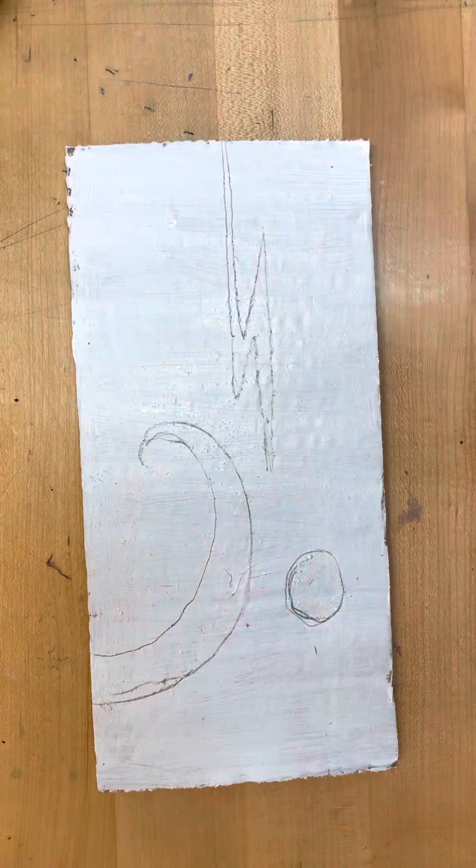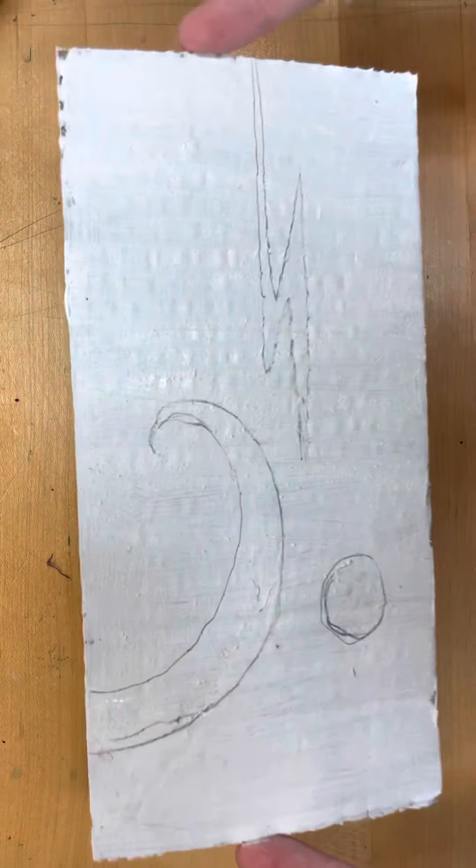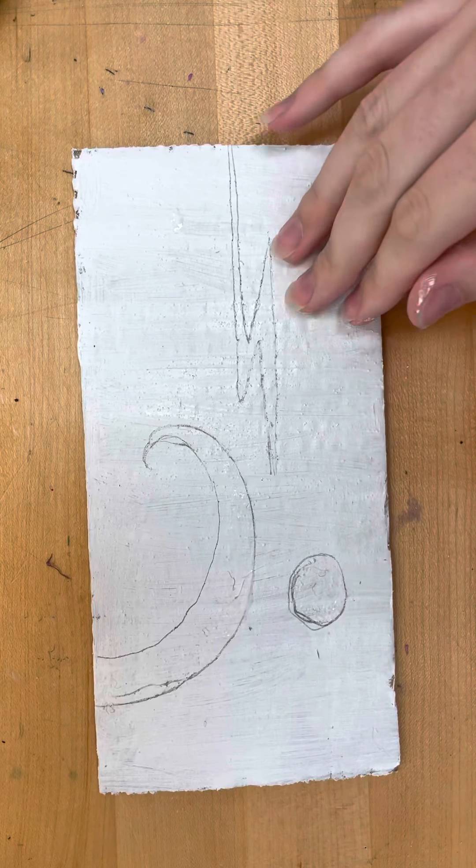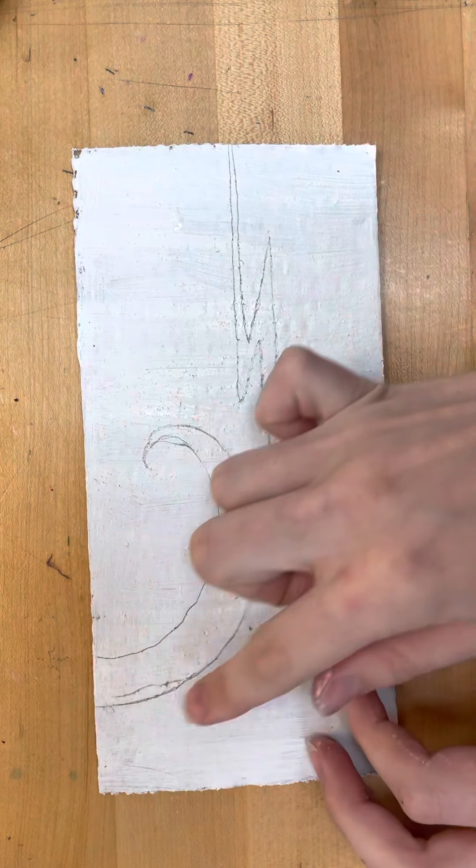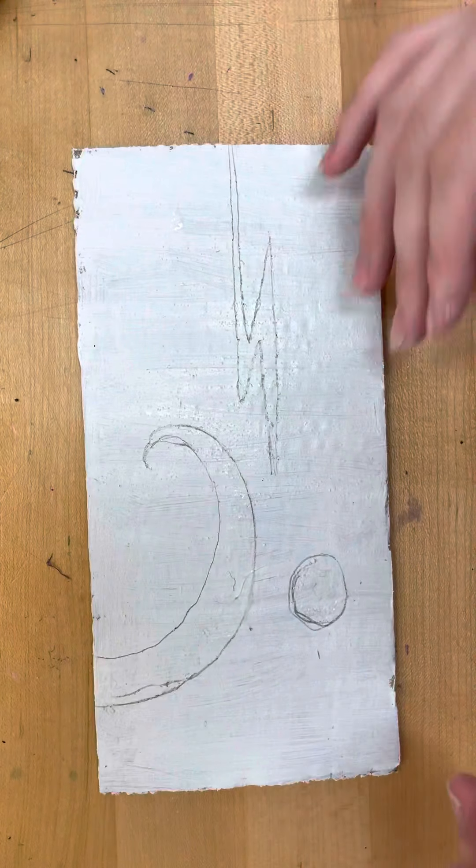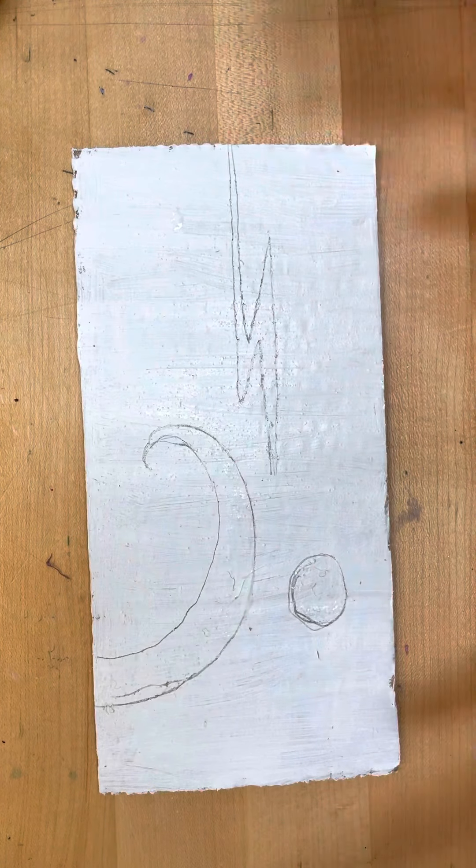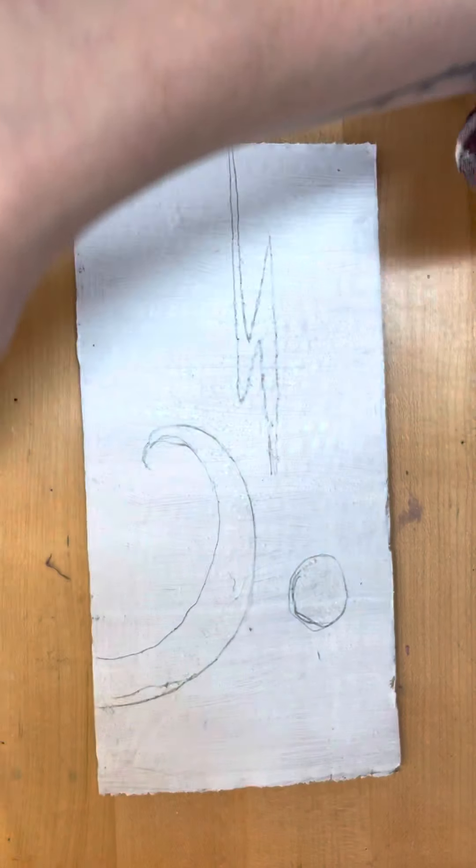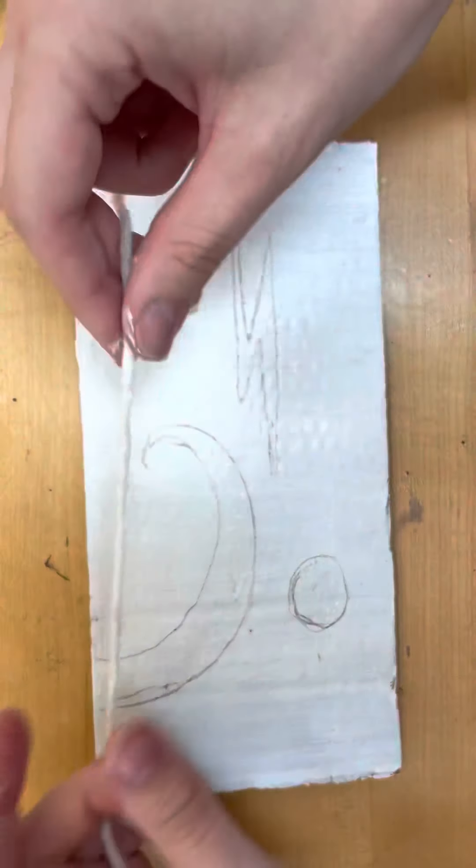Okay, so there's a couple of different ways that we can go about this. But first, before we really start anything, we need to make sure that we have our painted white or black canvas on our cardboard, and then we have our design sketched out on our canvas. Mine is just a couple of different shapes. You'll have something different, whatever you choose.